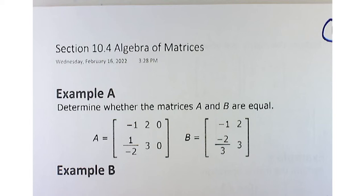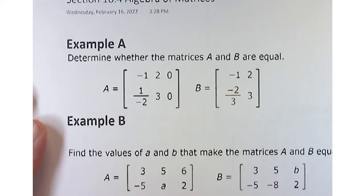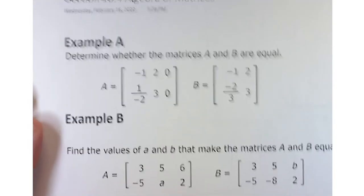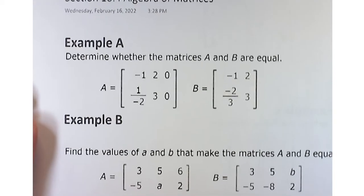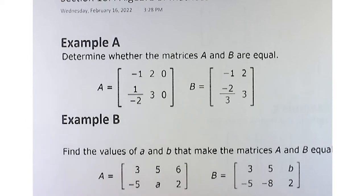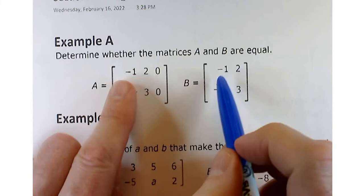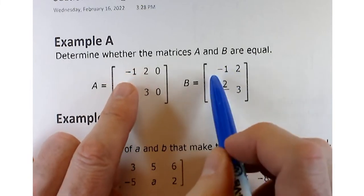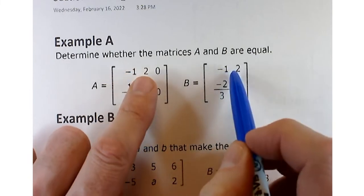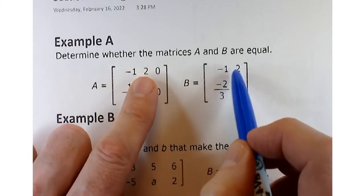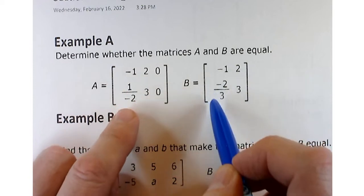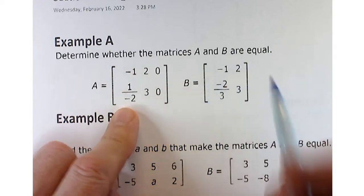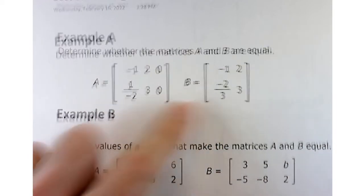Now one of the little steps — kind of a baby step — is to determine whether two matrices are equal. If they're equal, then by definition each of the little parts has to be the same. So negative 1, negative 1, that lines up; 2 and 2; negative 1 half — and uh-oh, those don't match.